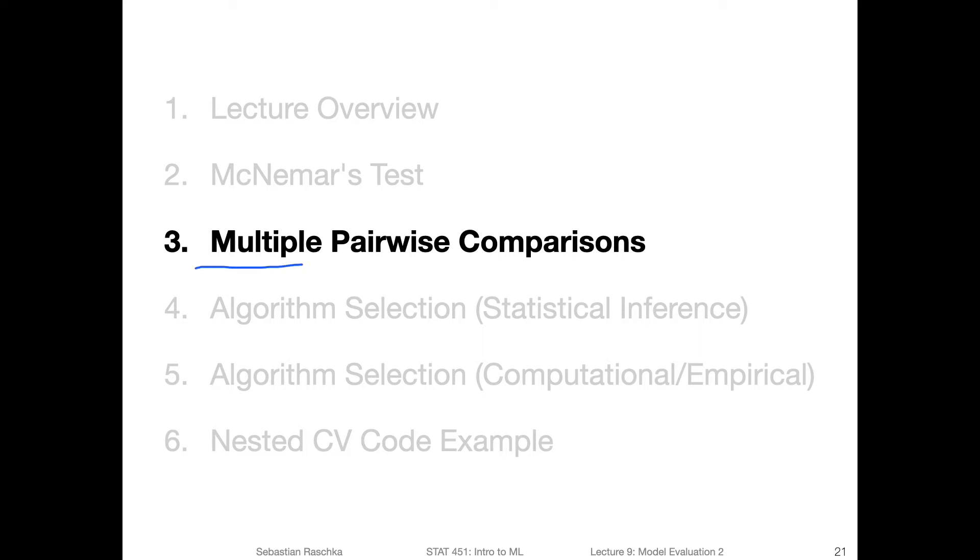Let's talk about the case of multiple pairwise comparisons. So a scenario where you have a model that you want to compare with many other models that you maybe find published in literature on GitHub and so forth. How can we go about that?